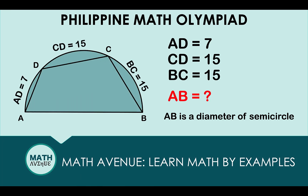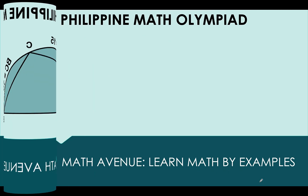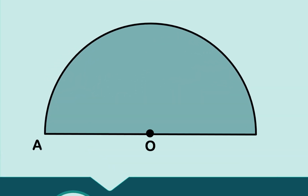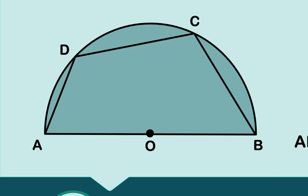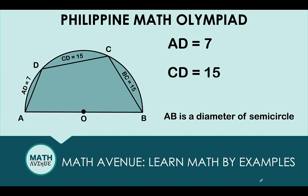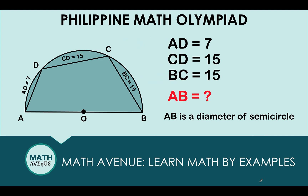Hey everyone, here's our math problem for today. Let's begin with the semicircle O with diameter AB. We draw three line segments AD, CD, and BC, where AD is equal to 7, CD equals 15, and BC is equal to 15 as well. We would like to find the length of segment AB, which is the diameter of the semicircle. You can pause the video and see if you can solve this interesting Philippine Math Olympiad question.